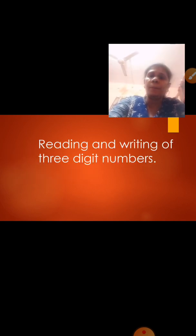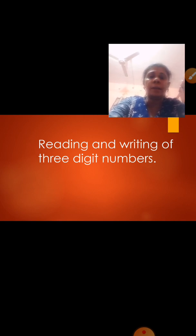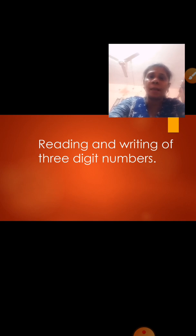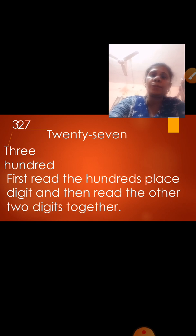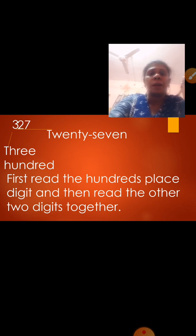Now we will be doing reading and writing of 3 digit numbers. We are going to learn how to write numbers in the hundreds, tens, and units place. See the number 3, 2, 7. From your left hand side, the first number is 3, that will be 300. We will read the hundreds place first. Always in a 3 digit number, we read first the hundreds place digit and then the other 2 digits together. The first number is 300.